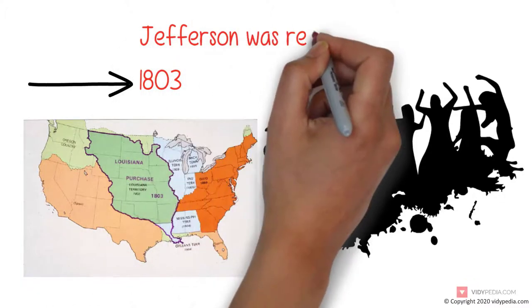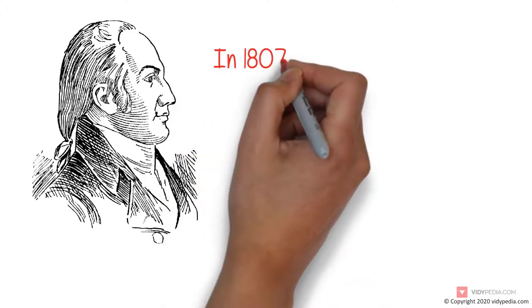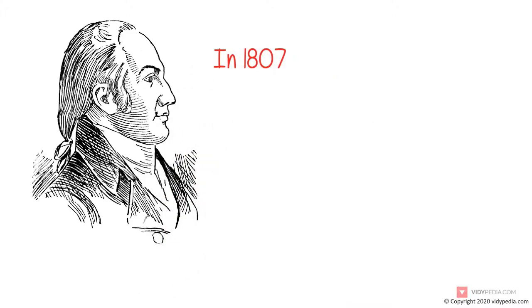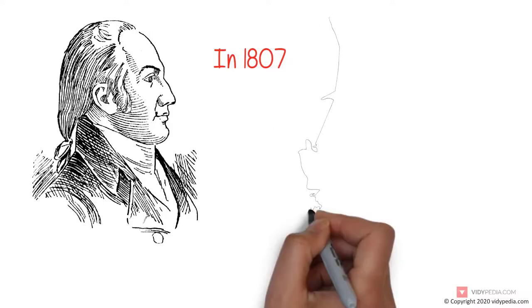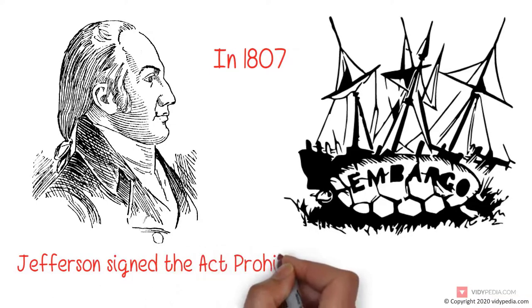Jefferson was re-elected in 1804. His second term was beset with difficulties at home, including the trial of former Vice President Aaron Burr. In 1807, American foreign trade was diminished when Jefferson implemented the Embargo Act in response to British threats to U.S. shipping. The same year, Jefferson signed the Act Prohibiting Importation of Slaves.